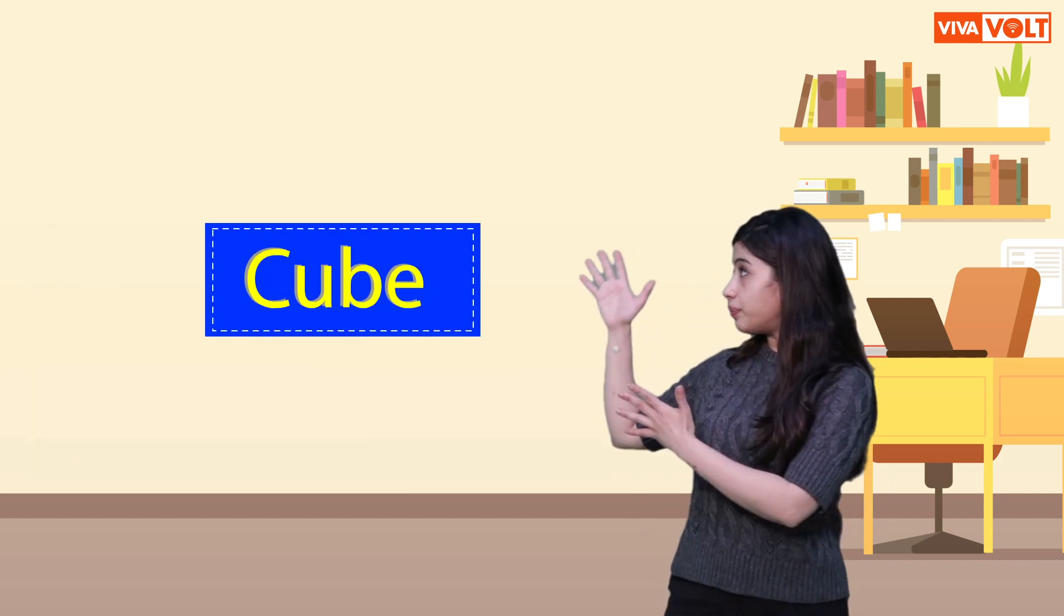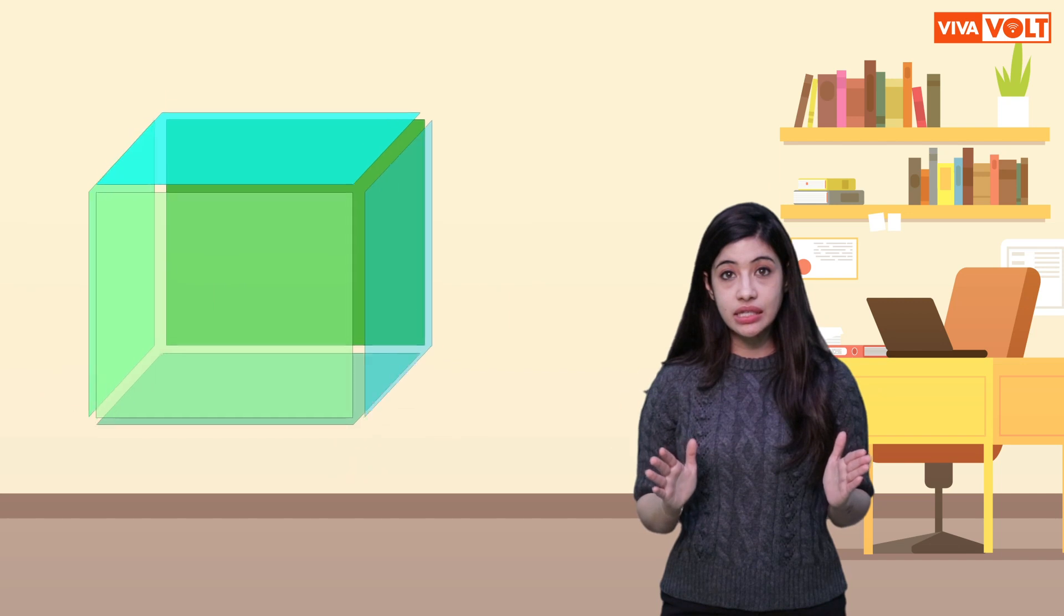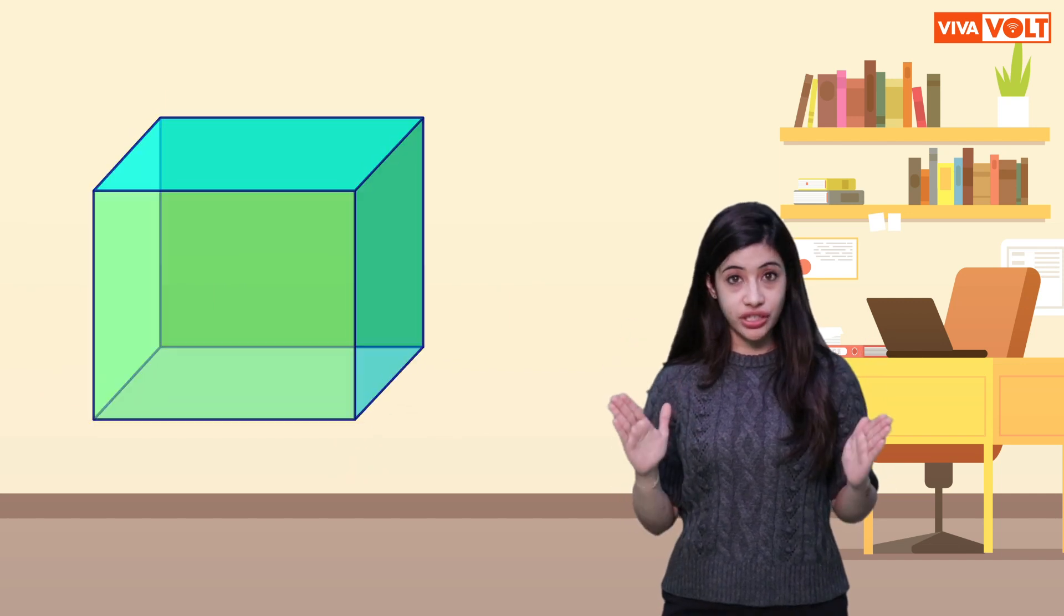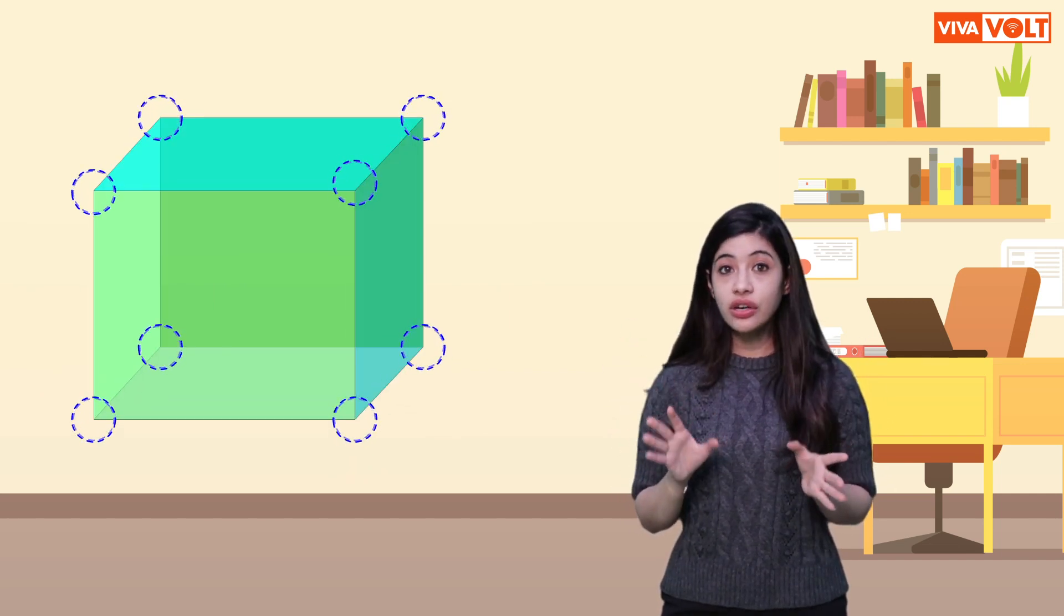It has 12 edges. Let's learn more about solid shapes. Cube. A cube has six square faces, 12 straight edges, and eight corners or vertices.